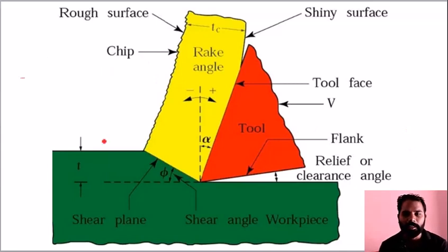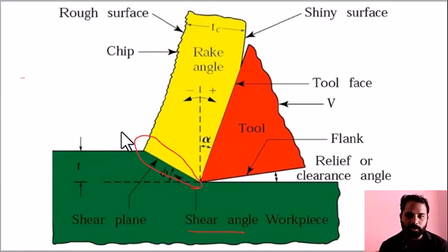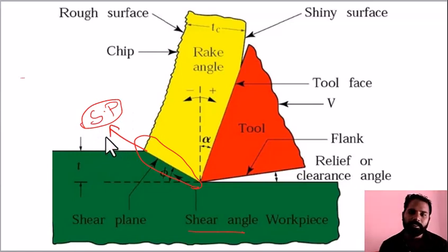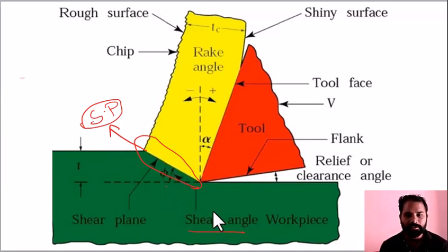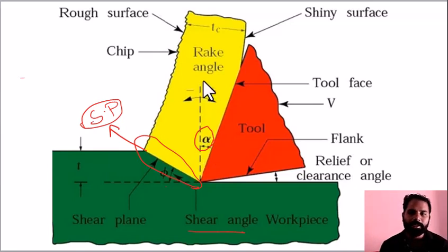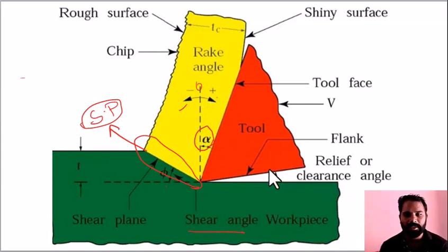For the Velocity Triangle, three angles are important. First is the Shear Angle, related to the shearing operation. Second is the Primary Shear Zone — in this zone there is a well-defined shear plane, where most material deformation occurs at low cutting speed. Third is the Rake Angle and Relief Angle, also called Clearance Angle.